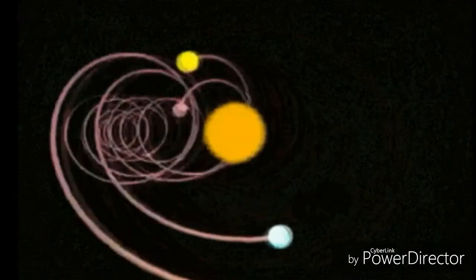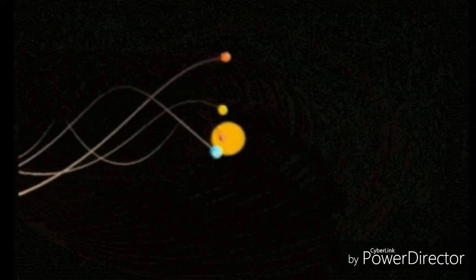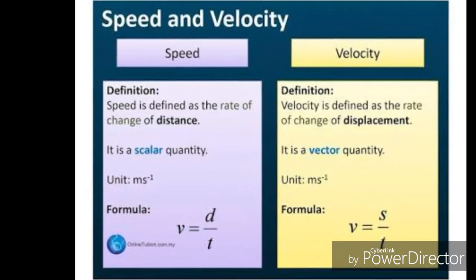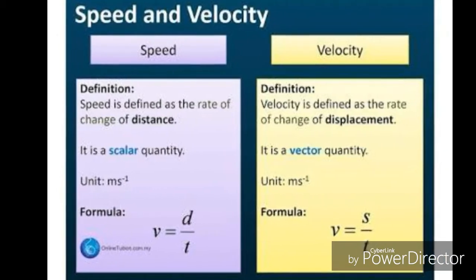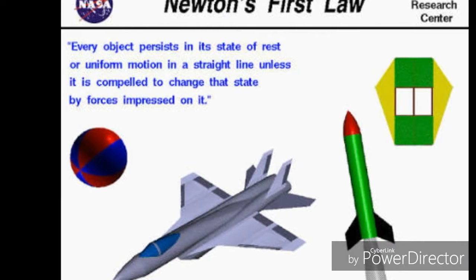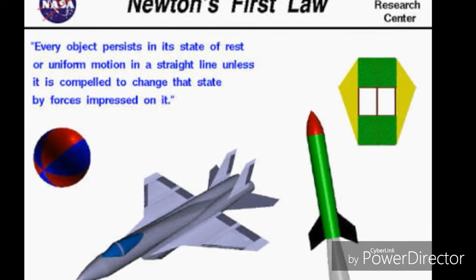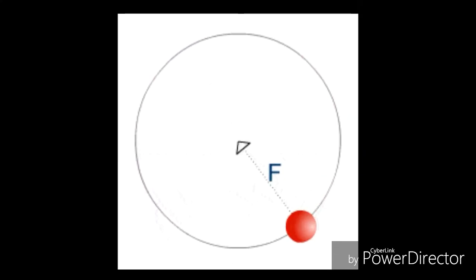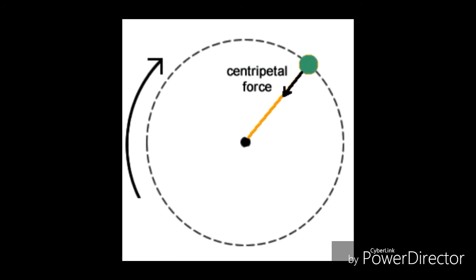The planets travel around the sun in paths called ellipses. When an object moves in a circle, its speed remains constant but as the direction is constantly changing, so is its velocity. This is because velocity has size and direction whereas speed only has size. For an object moving in a circle, a force is required to change the direction as defined by Newton's first law of motion. This force constantly pulls the object towards the center of the circle, and a force that pulls an object towards the center of a circle is called centripetal force.